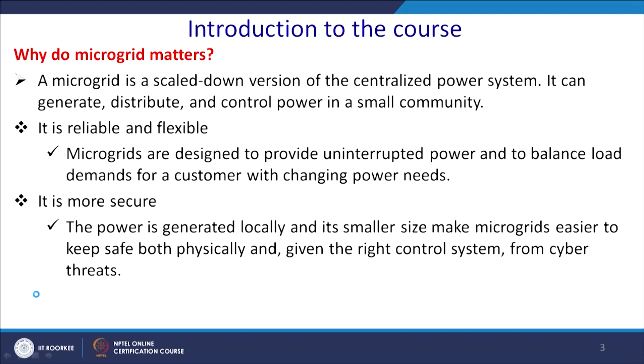In the AC system, balance load and related issues come in. In DC microgrid, only voltage is the issue. Why is it more secure than the centralized grid? The power generated locally and the smaller size makes microgrid easier to keep safe both physically and, given the right control system, from cyber threats. One can introduce corrupted data into a centralized distribution or transmission system and collapse the whole system.